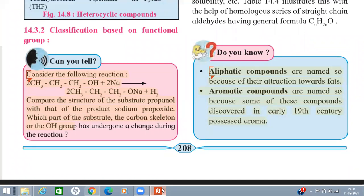Hello, good morning students. In the last lecture we had studied about classification of organic compounds. We know there are a variety of organic compounds and there are different ways to classify them. Organic compounds are classified on the basis of structure or the carbon skeleton, and another way of classification is based on functional group.